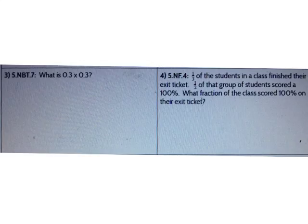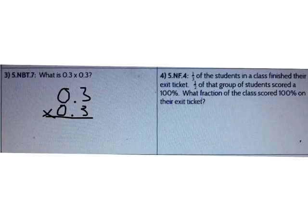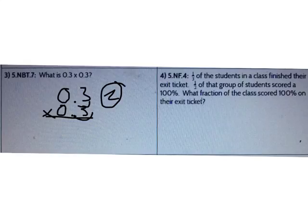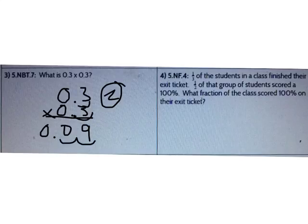Now let's multiply decimals. What's 3 tenths times 3 tenths? First I need to count how many digits are behind the decimal. How many digits are behind the decimal in both factors? There are 2 digits behind the decimal. Now I can multiply like there's no decimal there. What's 3 times 3? It's 9. Where would I place the decimal to end in the hundredths place so that there are 2 digits behind the decimal? I need to go 1, 2 over. So my answer is 0 and 9 hundredths.